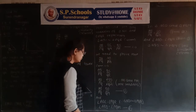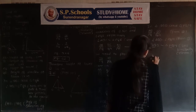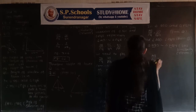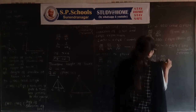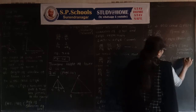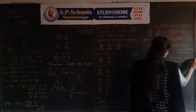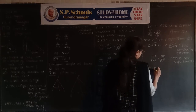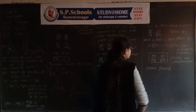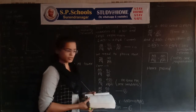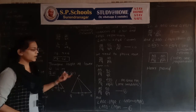Now taking the required ratio: since triangle ABD is similar to triangle PQM, their corresponding sides are proportional, so AB upon PQ equals AD upon PM. Hence proved: AB upon PQ equals AD upon PM. This shows that if two triangles are similar, their medians are proportional to the ratio of their corresponding sides.